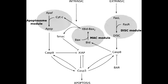Name some instances when the intrinsic pathway is activated. The intrinsic pathway is activated in tissue remodeling and embryogenesis. It also occurs when growth factor is withdrawn from a proliferating cell population, such as when there is a decrease in interleukin-2 after a completed immune reaction, and this leads to apoptosis of the proliferating effector cells.